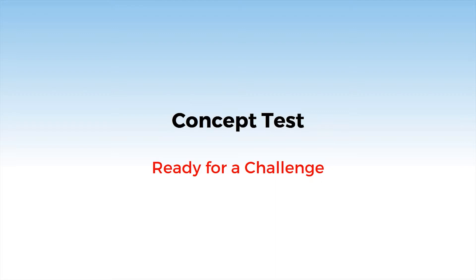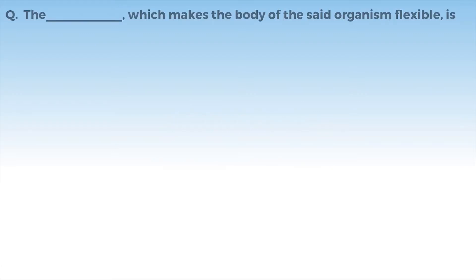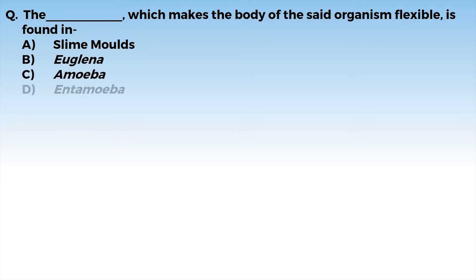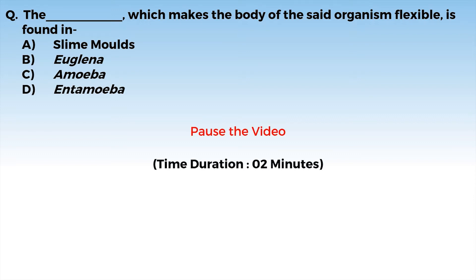Now we will test the concept of the class. Ready for a challenge? The dash which makes the body of the said organism flexible is found in: option A, slime molds; option B, euglena; option C, amoeba; option D, entamoeba. Class, we have 2 minutes pause to review the question and options.